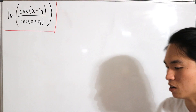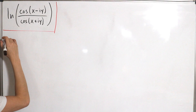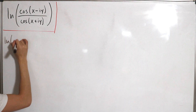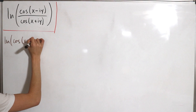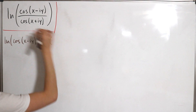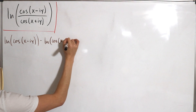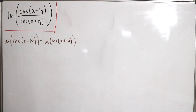Since we have a division inside the log, we can write this as a difference of natural logs: ln of cos(x minus iy) minus ln of cos(x plus iy).